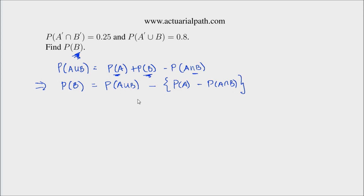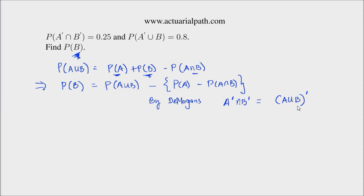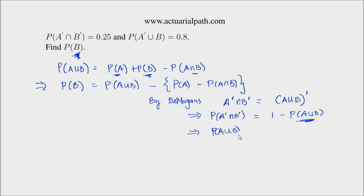By DeMorgan's law, the event A complement intersection B complement is equal to (A union B) complement. When you distribute the complements, the union changes to intersection. This implies the probability of A complement intersection B complement equals 1 minus the probability of A union B. From here, P(A union B) equals 1 minus 0.25, so A union B has a probability of 0.75.